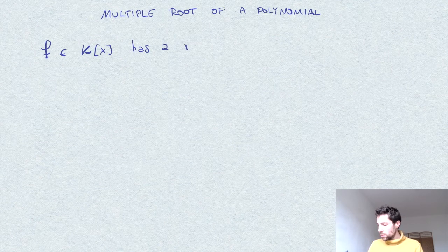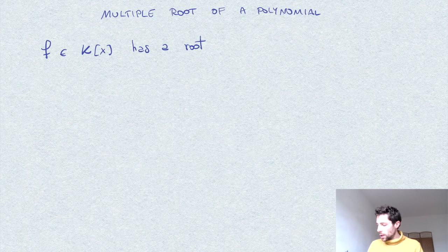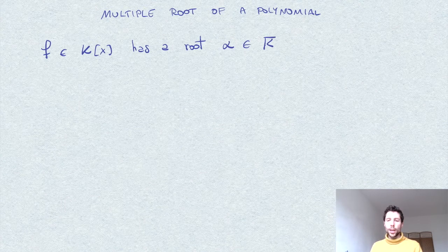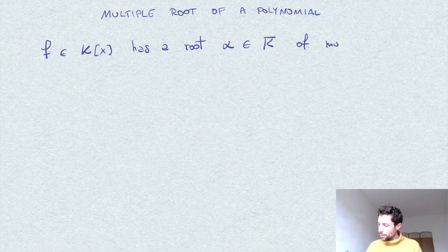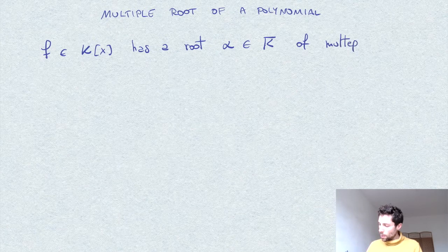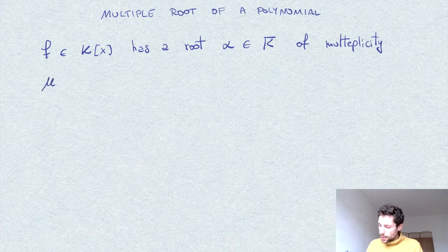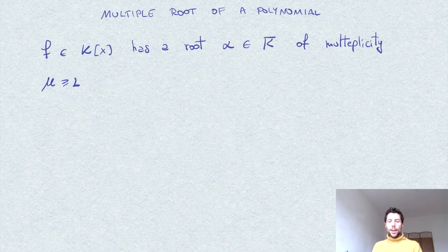Say alpha in the algebraic closure of k of some multiplicity, say at least two, if and only if